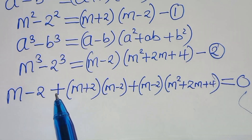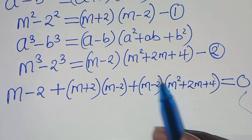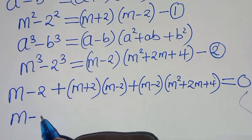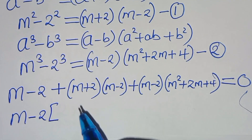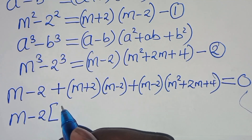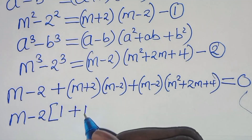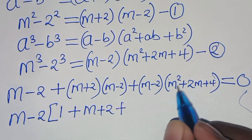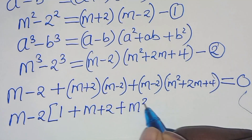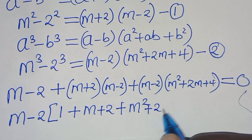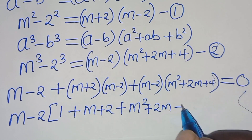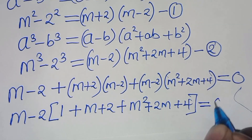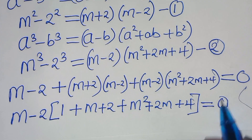(m minus 2) is common here, so we can factor out (m minus 2). In the parentheses we'll have 1 plus (m plus 2) plus (m squared plus 2m plus 4). Close the brackets. This equals 0.